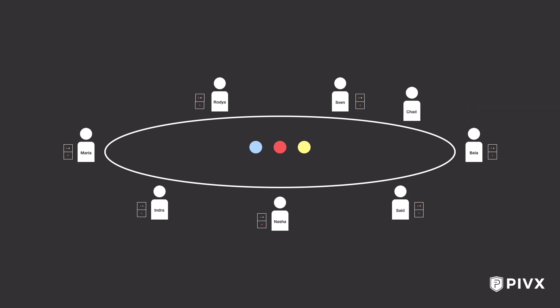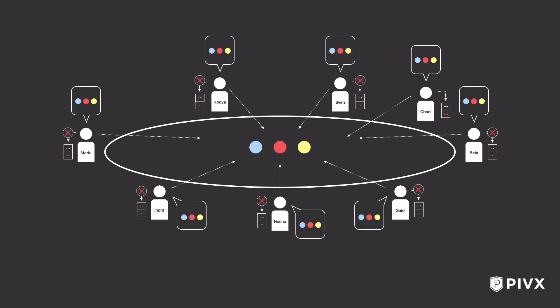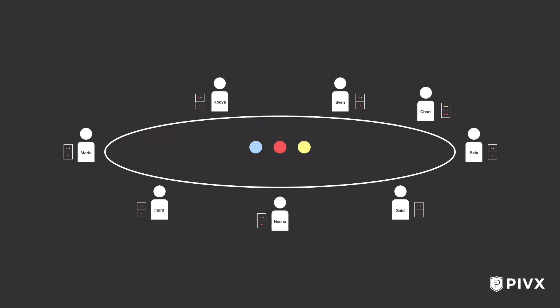Now let's say that Chad rolls up but this time brings an incorrect copy of the photo strip records. If Chad gets chosen to go first, he would say: hey, I see that the tarp contains a blue ball, a red ball, and a yellow ball. And by the way, my prior records indicate that before this there were three yellow balls, and before that three red balls. The other players would say: we agree about the status of the tarp, but our prior records do not match yours. Therefore, the threshold would not be met, and everyone would be very suspicious of Chad.